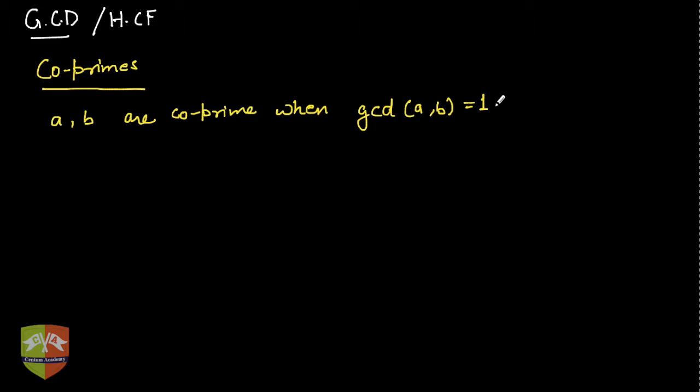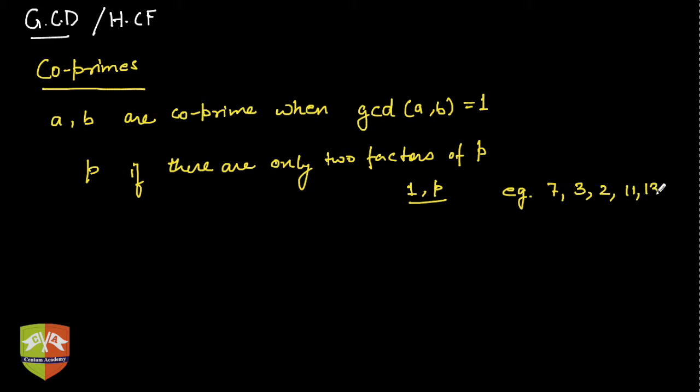Why are they called co-prime? What was a prime number? A number P is prime if there are only two factors of P: one and P itself. Examples are 7, 3, 2, 11, 13, 31.